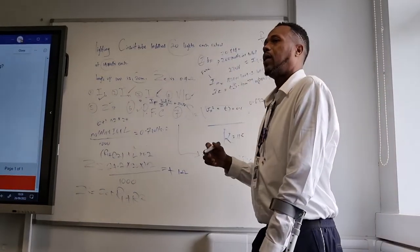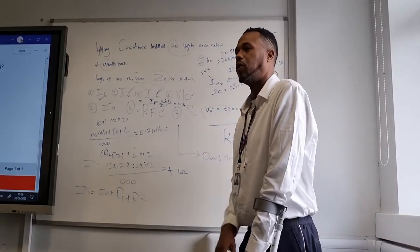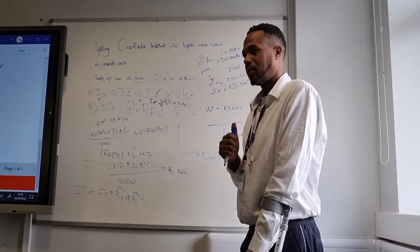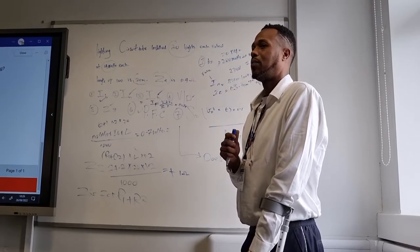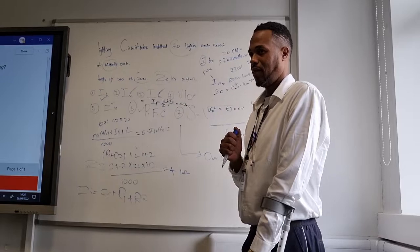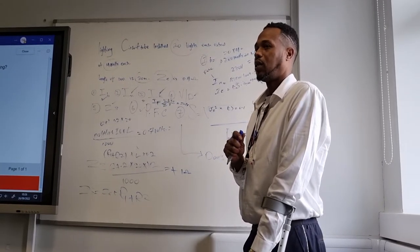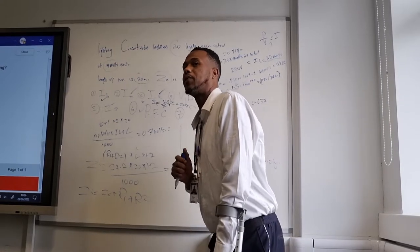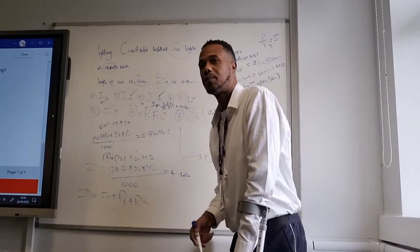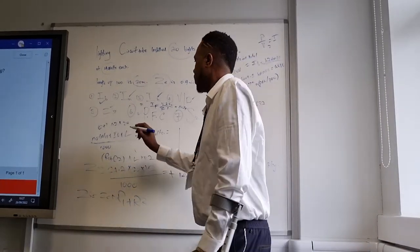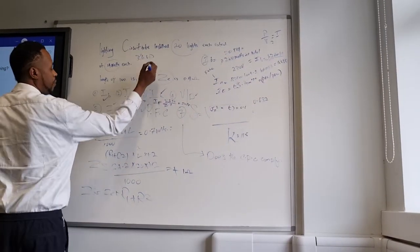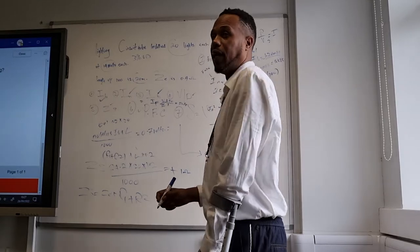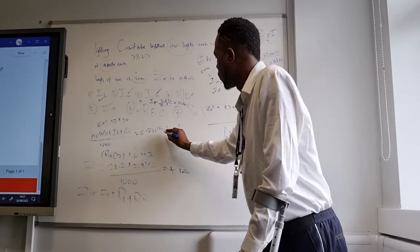At the same time, how do you know that 0.7 volts is acceptable? Because it's a lighting circuit. And lighting circuit, you allow how many percent? 3. Power, 5. Lighting, 3. So when you do 3% of 230, it comes to 6.9. So 3% of the voltage will give you 6.9 volts. So that's how you know 0.7 volts is acceptable.